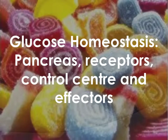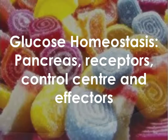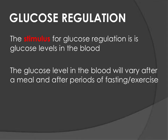This video on glucose homeostasis is going to look at the structure of the pancreas because the pancreas is vitally involved in glucose regulation. We're also going to break down the homeostatic cycle and look at what the receptors are, what the control center is, and what the effectors are. The receptors, the control center, and the effectors in glucose homeostasis are a little more confusing than previously and there is a lot more overlap between them.